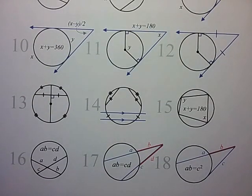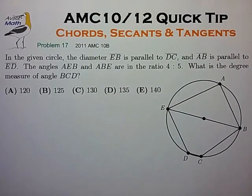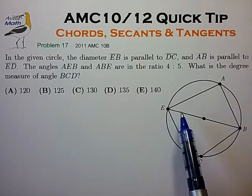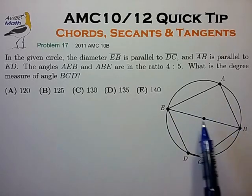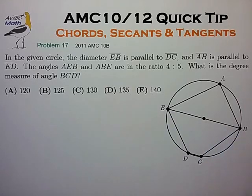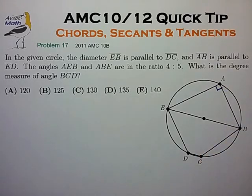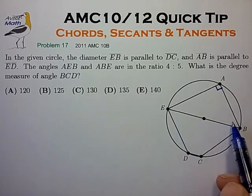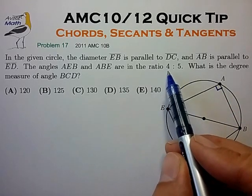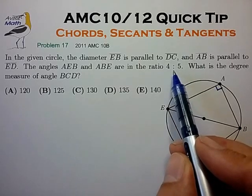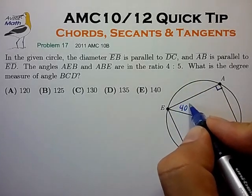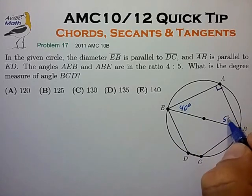You'll find a link to this table in the description section of this video. Getting back to our example problem, we'll need to work out various angles in this figure. We notice that this upper triangle spans the diameter of the circle, from which we quickly find that the angle at A is a right angle. So the angles AEB and ABE have to add up to 90 degrees, and we're told they're in the ratio four to five. So this angle has to be 40 degrees, and this one has to be 50 degrees.